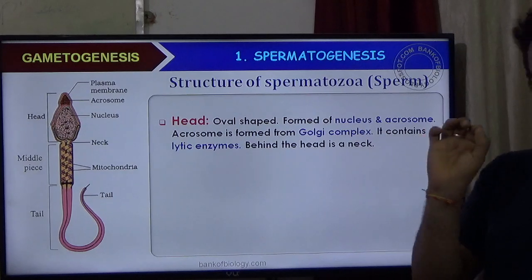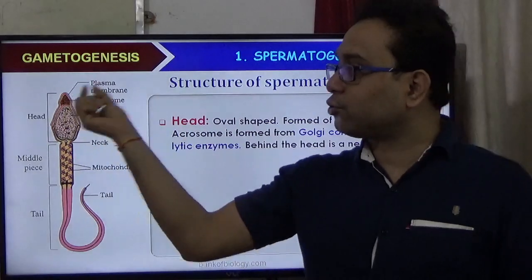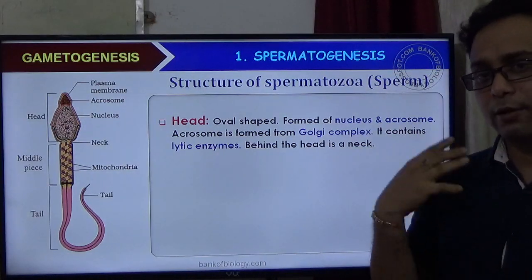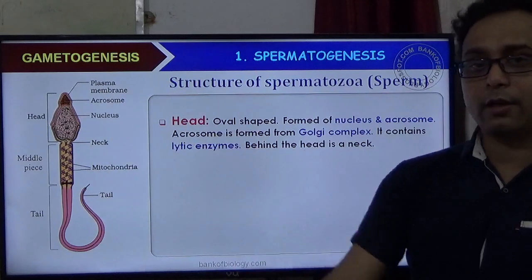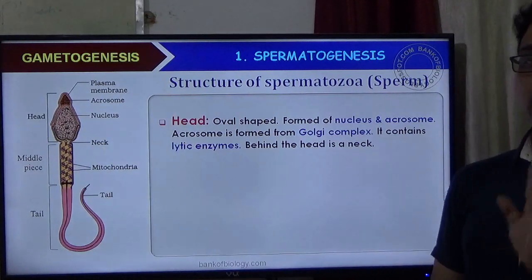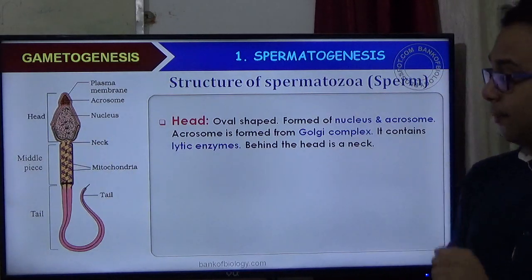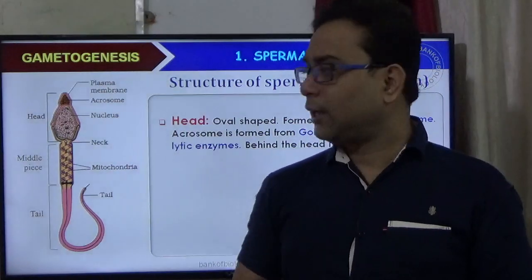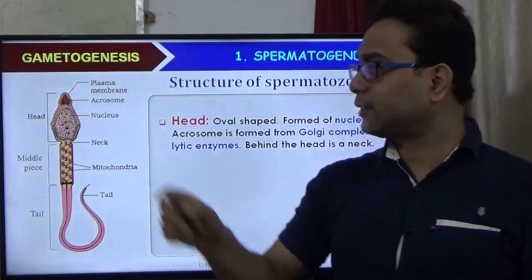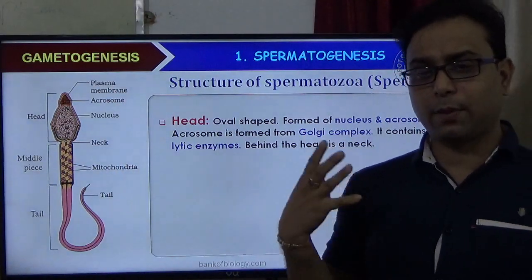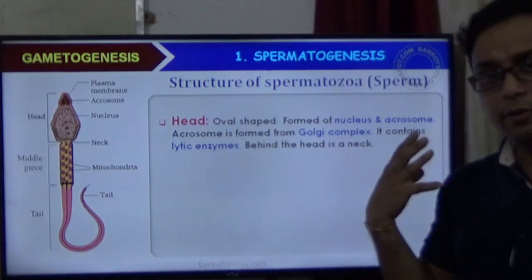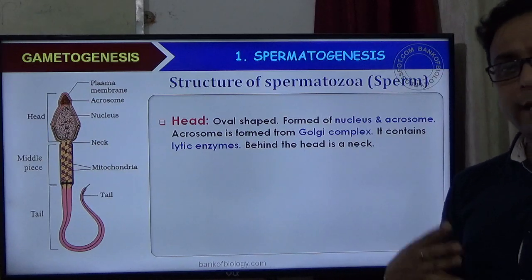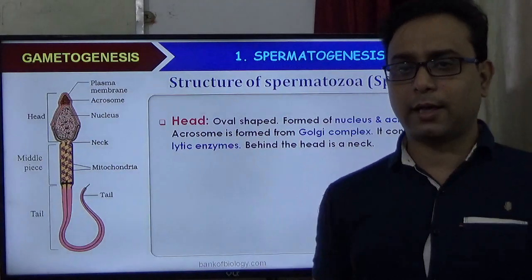The acrosome is an important part ultimately formed from the Golgi complex. The Golgi complex is responsible for acrosome formation — we discussed this in the cell chapter. The acrosome is considered a modified Golgi body. The acrosome contains different enzymes such as Spannin, Lysin, and Hyaluronidase.